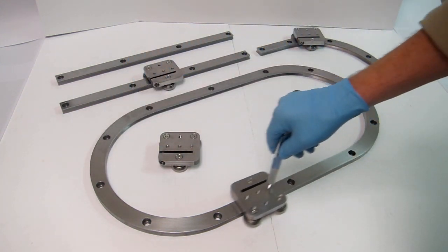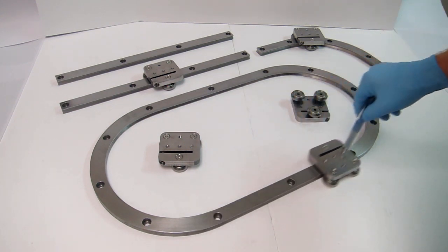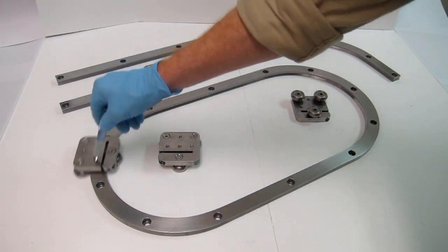As you can see, I'm moving a carriage along an oval track. The drive force is very low and very consistent along all parts of the track.